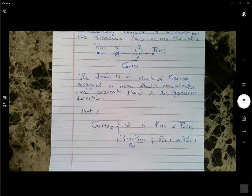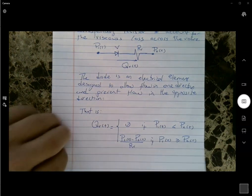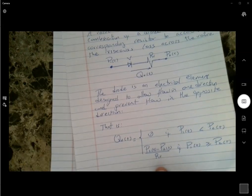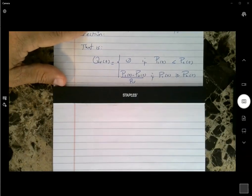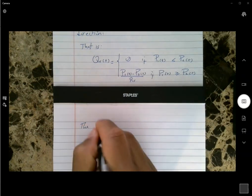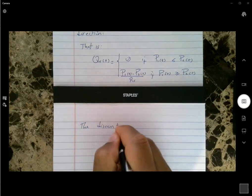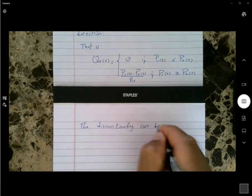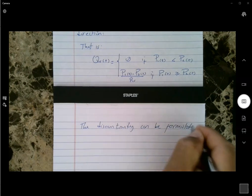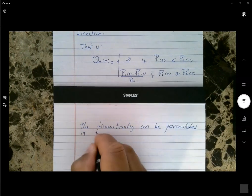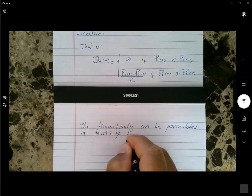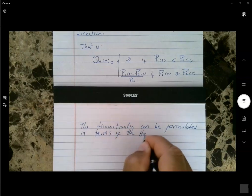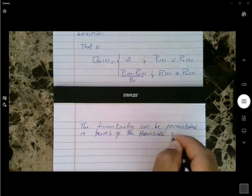This anomaly is going to result in the numerics responding with certain instabilities that we will have to mitigate — we'll see that in the MathCAD example. The discontinuity can be formulated in terms of the Heaviside step function H.